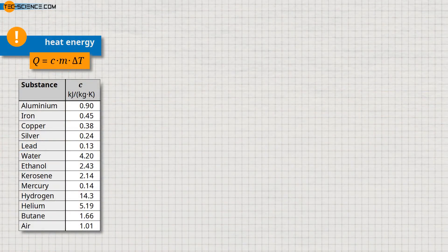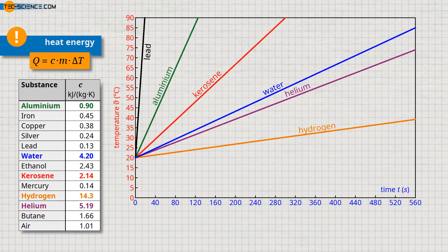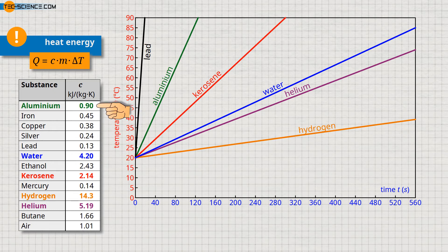The table shows the specific heat capacities of selected substances. In addition, the diagram shows the temperature curves for a mass of 1 kg at a heating power of 500 W. Compared to water, aluminum, for example, has a specific heat capacity of only 0.9 kJ per kg and kelvin, so that in this case only 0.9 kJ are required to heat 1 kg of aluminum by 1 kelvin.